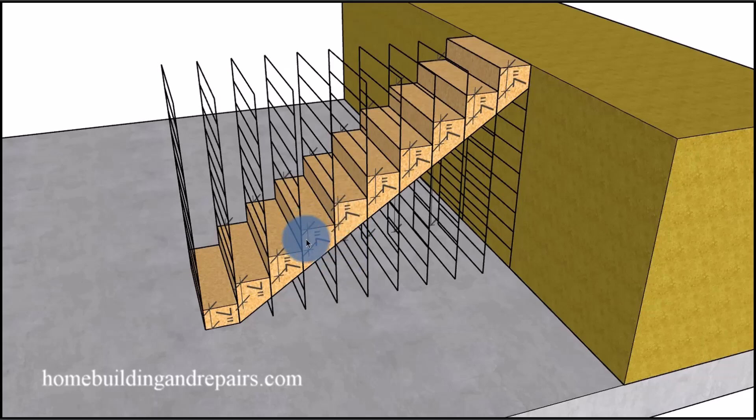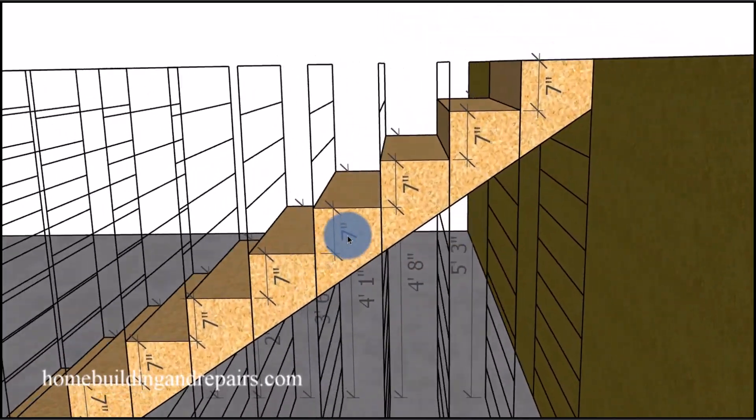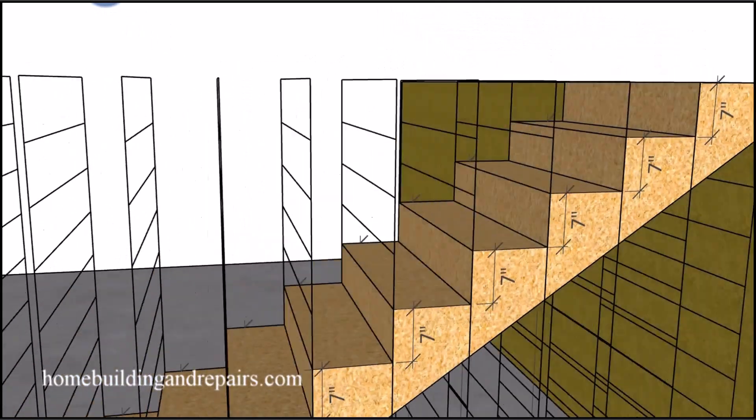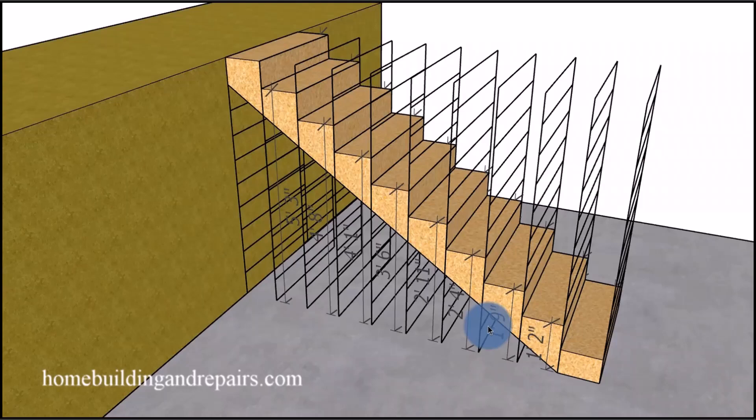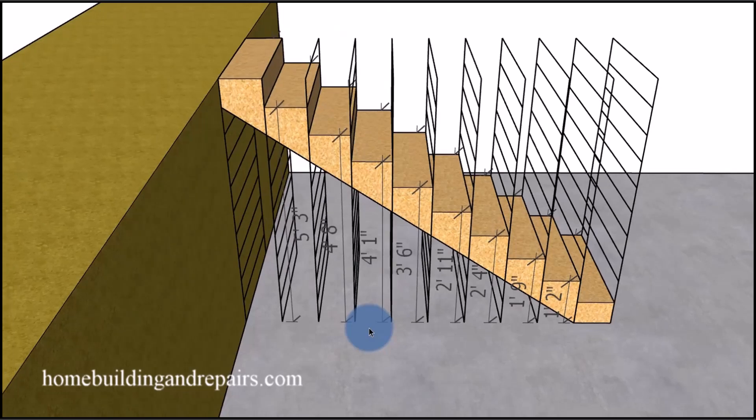And again, a story pole will work just fine if you understand exactly what you're doing with the story pole. So again, you're looking for the individual height of each step off of the ground, then you could probably do it with a story pole a little bit easier than you can with one of these riser ladders.